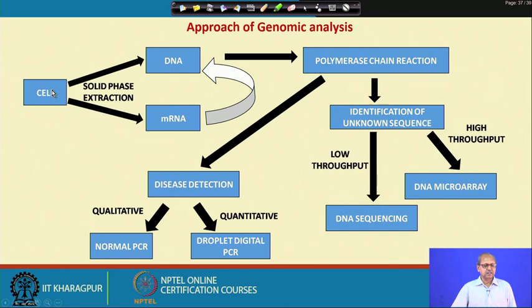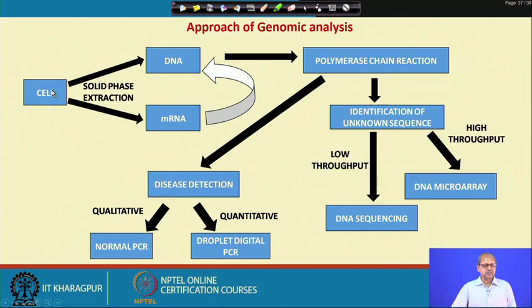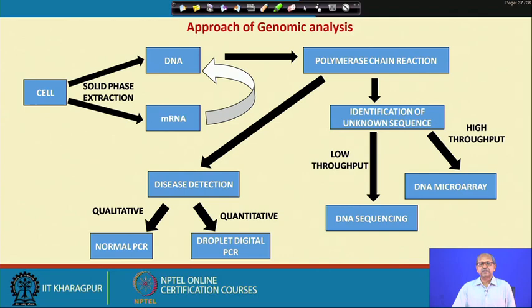First, we shall go through the gene analysis workflow. Starting from a single cell or cell mass like tissue, we extract nucleic acid — either DNA or RNA — by solid phase extraction. Then we perform polymerase chain reaction to multiply the DNA to a large quantity. From PCR, we can go for DNA sequencing or DNA microarray, and how PCR is integrated in the lab-on-chip platform to get readouts like DNA quantity or gene expression level.